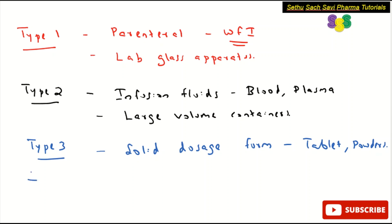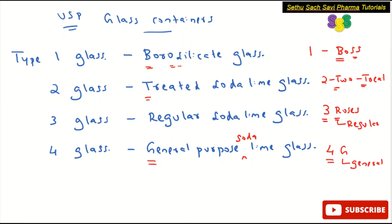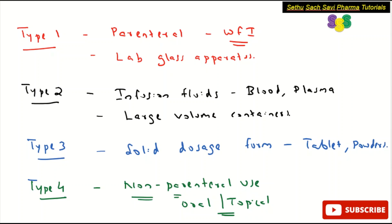Type 4 — general purpose soda lime glass — is mainly for non-parenteral use. Oral preparations or topical preparations are mainly filled in Type 4 glass. These are the important points to remember regarding the four types of glass containers, their names, and their purposes.